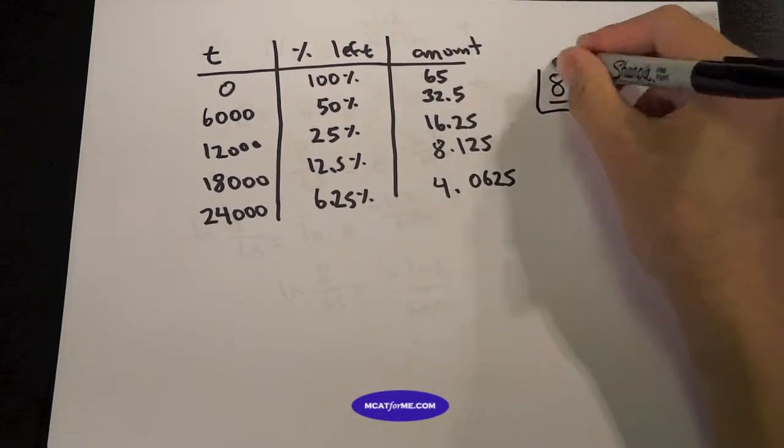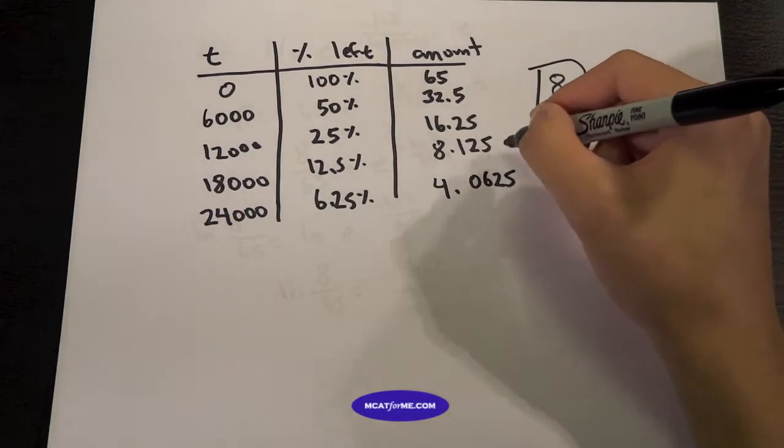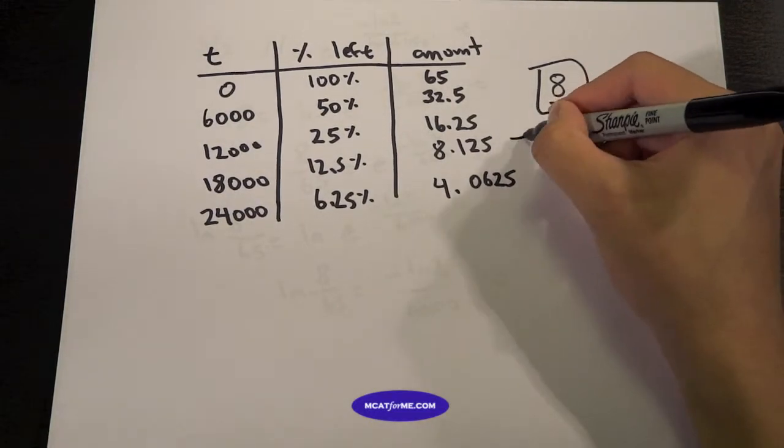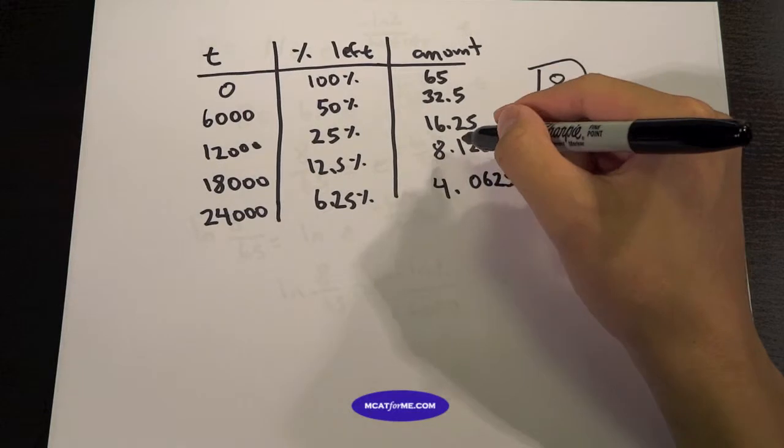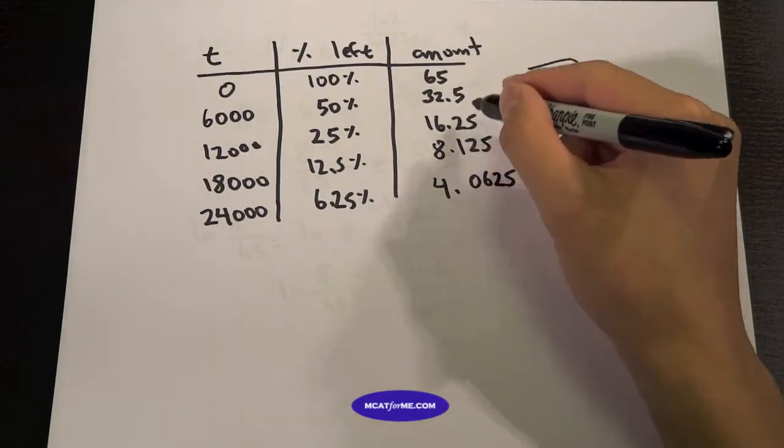And our number is 8. We wanted 8. Is 8 going to be in between this range or this range? Is it between 4 and 8.125 or is it between 8.125 and 16.25?